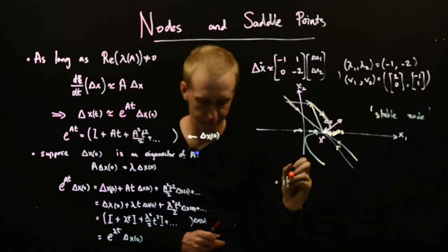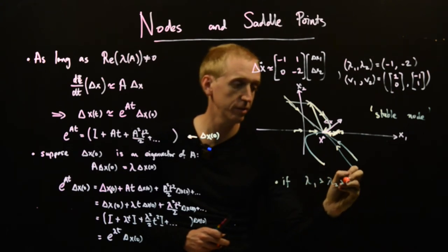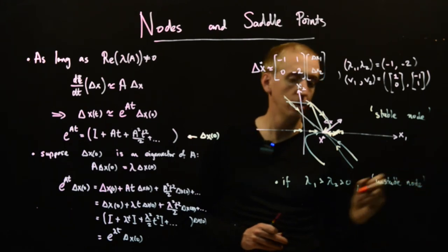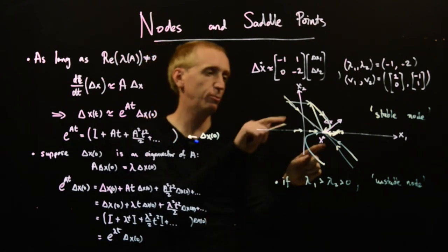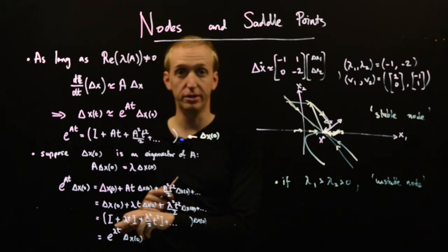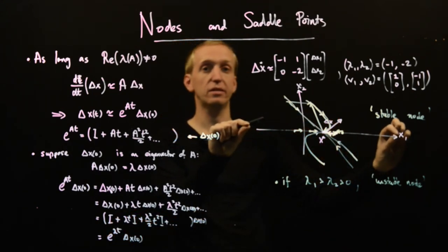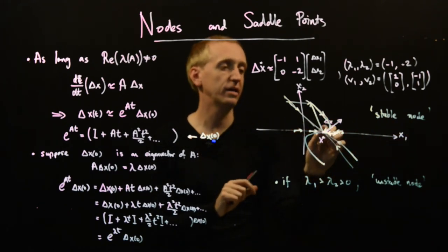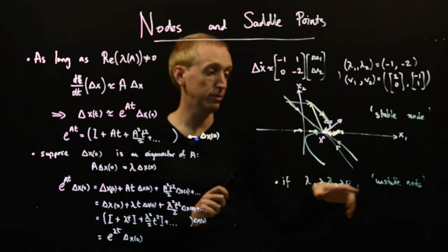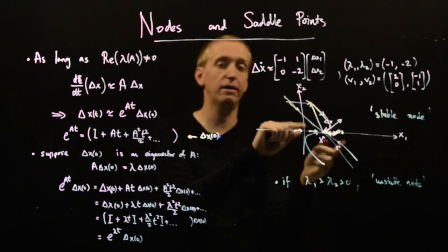We have two closely related classifications. If lambda 1 is greater than lambda 2 is greater than 0, we have an unstable node. All that would mean is that starting on either eigenvector we'd be pushed away at a rate e to the lambda t, since lambda is now positive and this term grows over time. The fast eigenvector direction grows faster, so the phase portrait looks the same as the stable node but with all arrows reversed.